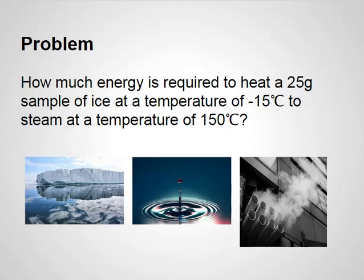In order to complete this we need to take ice, heat it up to the melting point, fully melt it into liquid water. We need to then heat that water from zero degrees Celsius to the boiling temperature of 100 degrees Celsius, and then once we've converted all that water to steam we need to superheat it to a temperature of 150 degrees Celsius.